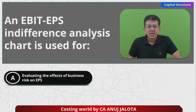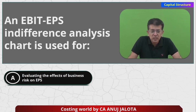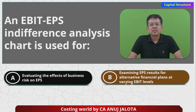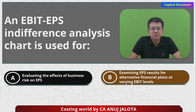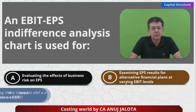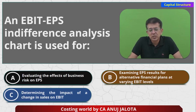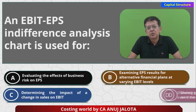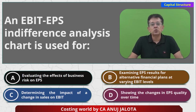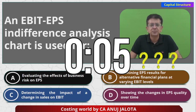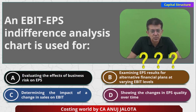Option A: evaluating the effects of business risk on EPS. Option B: examining EPS results for alternate financial plans at varying EBIT levels. Option C: determining the impact of change in sales on EBIT. Option D: showing the changes in EPS quality over time. If you know the answer, this is the time to comment — please comment your correct answer below.